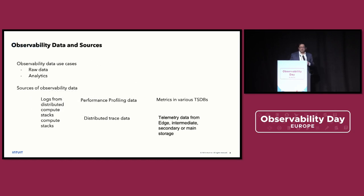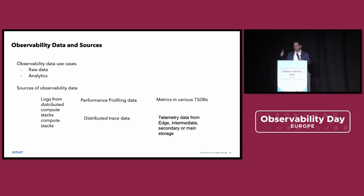The challenge here is that we deal with a lot of raw data and a lot of derived and analytical data. There's logs, traces, metrics coming in, as well as profiling data and performance data. For various reasons, we need to keep data on the edge, in the cluster, in intermediate storage such as S3 — primary or secondary storage. And the metrics, logs, etc. need to be correlated and stitched together. You have data in a number of stores, and all of it needs to be stitched together to have any meaningful analytics.